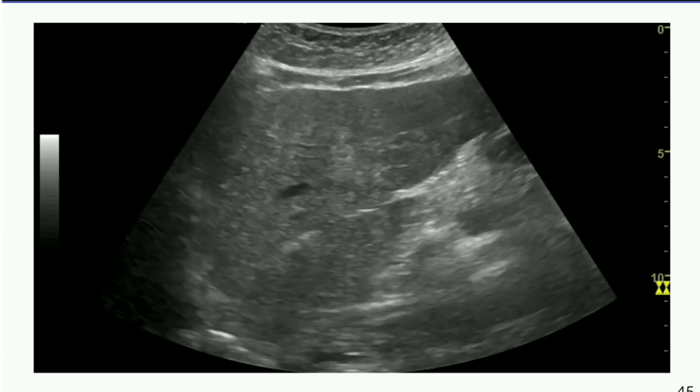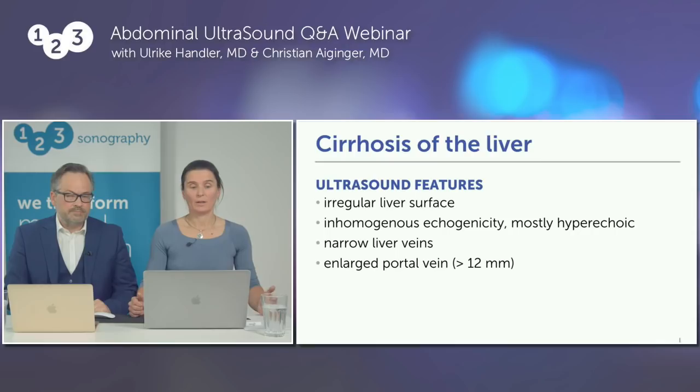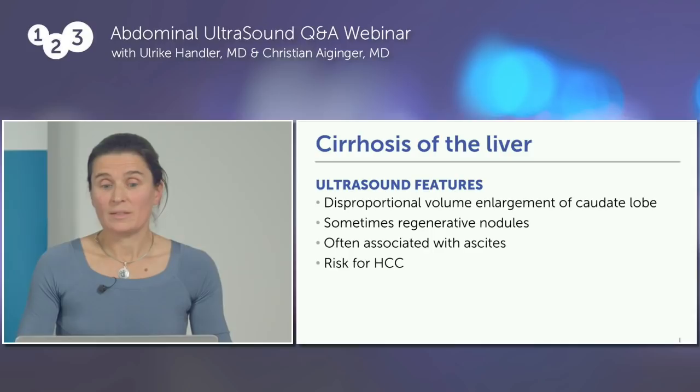Summary of liver cirrhosis: irregular liver surface with small humps and bumps, inhomogeneous echogenicity, narrowed liver veins, sometimes enlarged portal vein especially in portal hypertension, often a very prominent caudate lobe, possible regenerative nodules, often ascites, and an increased risk for liver cell carcinoma.